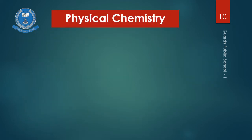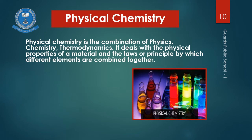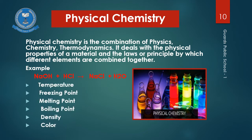Physical chemistry is the combination of physics, chemistry, and thermodynamics. It gives information about the properties of materials and the laws or principles by which different elements are combined together. In other words, it covers the knowledge of the physical and chemical structure of compounds, the conditions by which different compounds react together to form new substances, and the forces or bonds which hold different atoms together. For example, when sodium hydroxide reacts with HCl, it produces sodium chloride and water. The knowledge of all conditions required for this reaction and all forces or bonds present between these elements is known as physical chemistry.